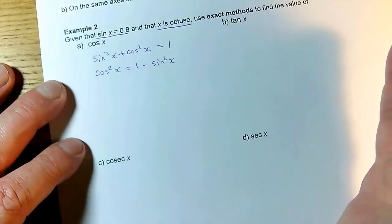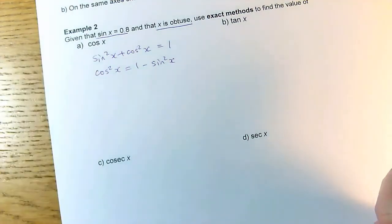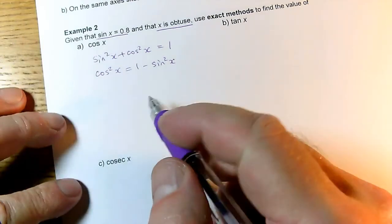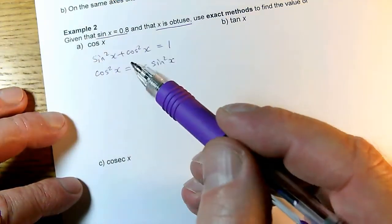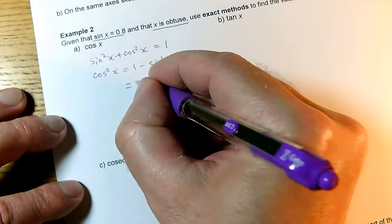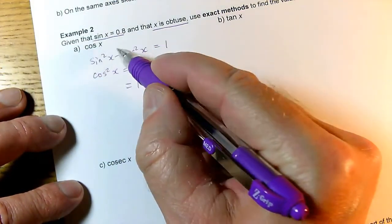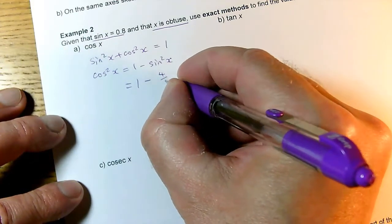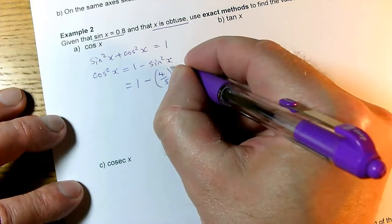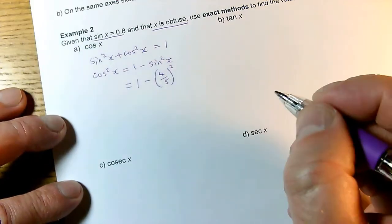That's your knee-jerk reaction if you see a sin² or cos² in a question - you can convert one into the other using this identity. So I need to do 1 - sin²x. Now, 0.8 as a fraction is 4/5, which is easier for me to square without a calculator.